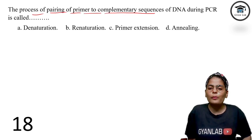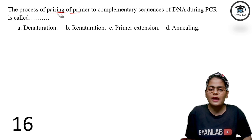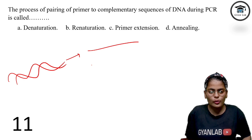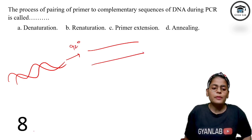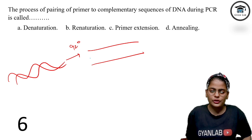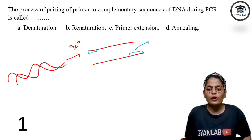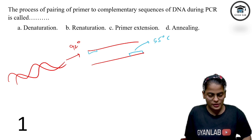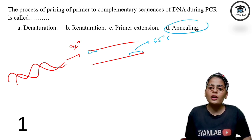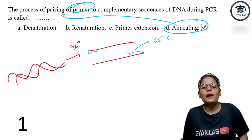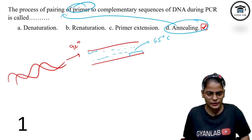The process of pairing of a primer to complementary sequences of DNA during PCR is called what? During PCR, you first open the double-stranded DNA — this is denaturation at 92°C. Then you insert primers, which attach at around 55°C. This particular step where the primer attaches is called annealing. After annealing, the extension procedure starts at 72°C.